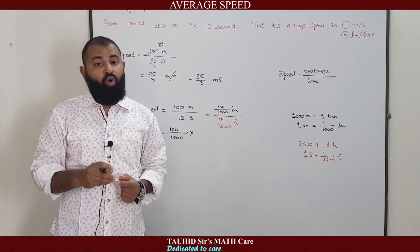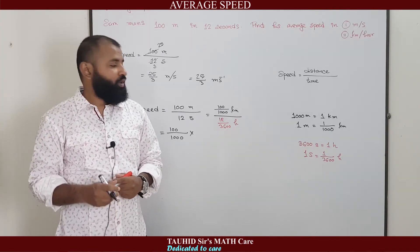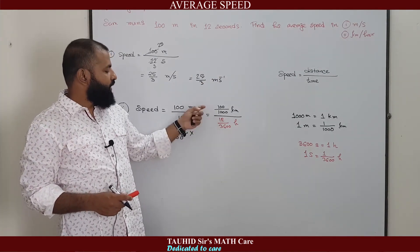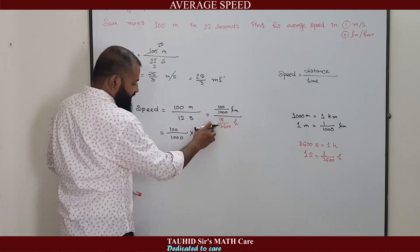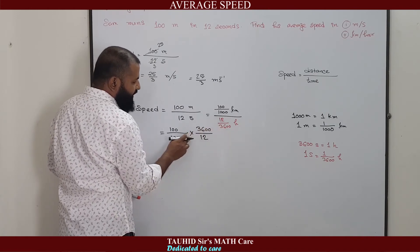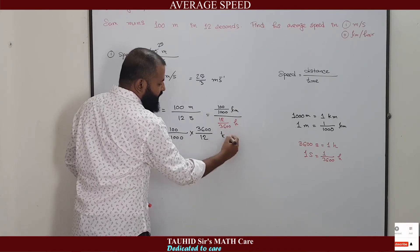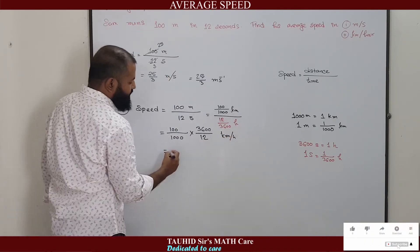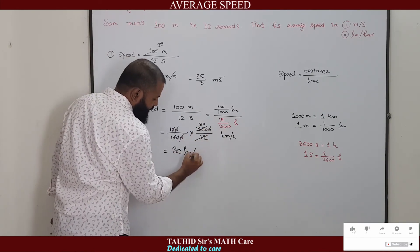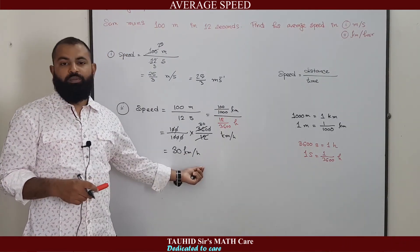Now we calculate the value. When one fraction is divided by another fraction, we reverse the denominator fraction and multiply it with the numerator. So the fraction in the denominator is reversed and multiplied with the numerator — giving kilometers in the numerator and hours in the denominator. This equals 360 divided by 12, which equals 30. The average speed of Sam is 30 kilometers per hour.